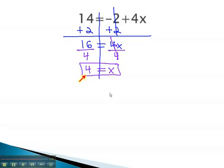Again, we notice that 4 is the number that makes this equation work. If we replace the x with 4, we have 4 times 4, which is 16. Minus 2 gives us the 14.